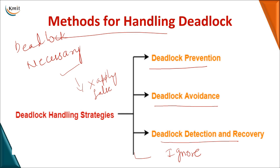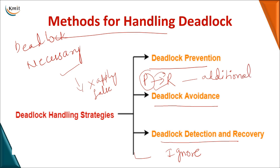In deadlock avoidance, whenever a process requests a particular resource, you check whether allocating it will lead to a deadlock. If it doesn't lead to a deadlock, you allocate the resource to the process; otherwise, you do not allocate it. So in avoidance, we need to gather some additional information related to the resources to check whether it leads to a deadlock or not.